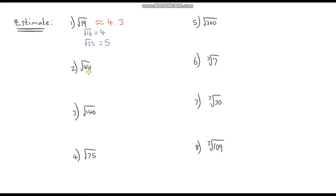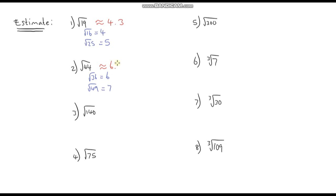Next: square root of 44. The square numbers below and above 44 are 36 and 49. The square root of 36 is 6 and the square root of 49 is 7 — it really helps to know your square numbers. So it's going to be between 6 and 7, but this time it's closer to 7, so I would say approximately 6.8.